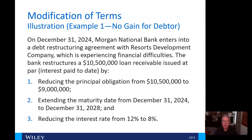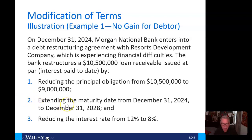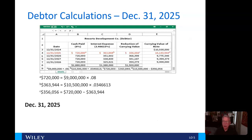Let's look at an example with no gain for the debtor. On December 31, 2024, Morgan National Bank enters into a debt restructuring agreement with Resorts Development Company, which is experiencing financial difficulties. The bank restructures a $10,500,000 loan receivable issued at par by: reducing the principal from $10,500,000 to $9 million; extending the maturity date from December 31, 2024 to December 31, 2028; and reducing the interest rate from 12% to 8%. That's a good place to stop this video — when we return, we'll look at the debtor calculations. Bye for now.